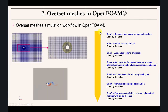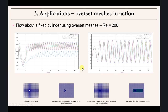Remember: only use overset meshes when you really need to, because there is an overhead — your simulations are going to be slower. And always remember it requires a completely new way of thinking when you generate the meshes. The general steps are four: the first four are general for any solver, and then there are specific extra steps for OpenFOAM such as computing stencils, type interpolation, solution, and so on.